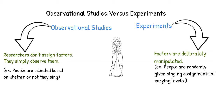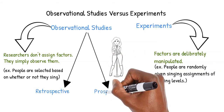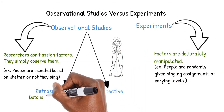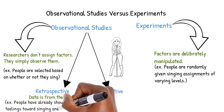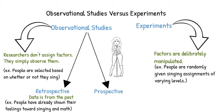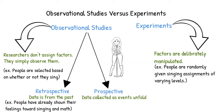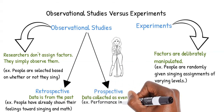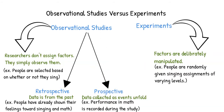Observational studies are divided into two types: retrospective studies and prospective studies. In a retrospective study, data is collected from the past — perhaps people have already demonstrated their feelings towards singing and math, and we examine the relationship between this already existing data. In a prospective study, data is collected as events unfold — perhaps we might track the student's performance in math and compare it to what we know about their singing ability. Though we are collecting data as events unfold, we don't have the ability to manipulate the variables.